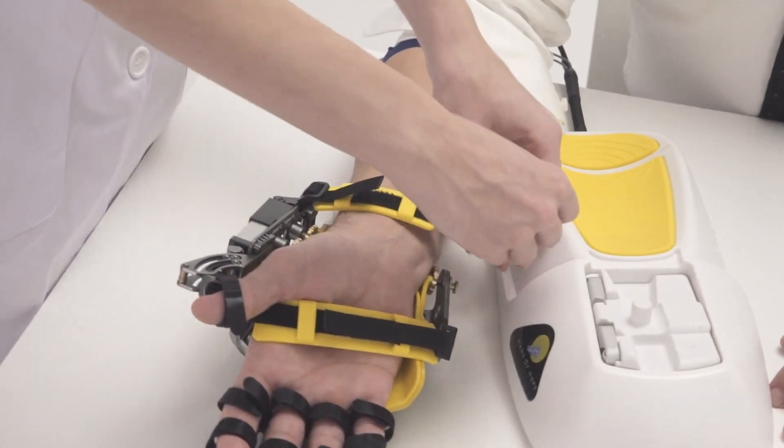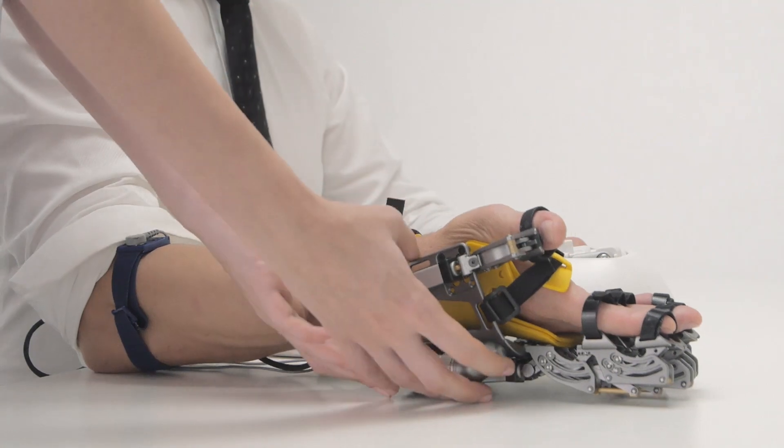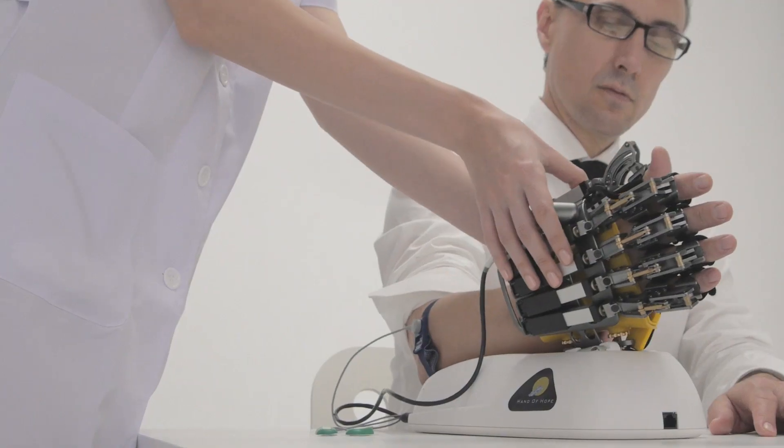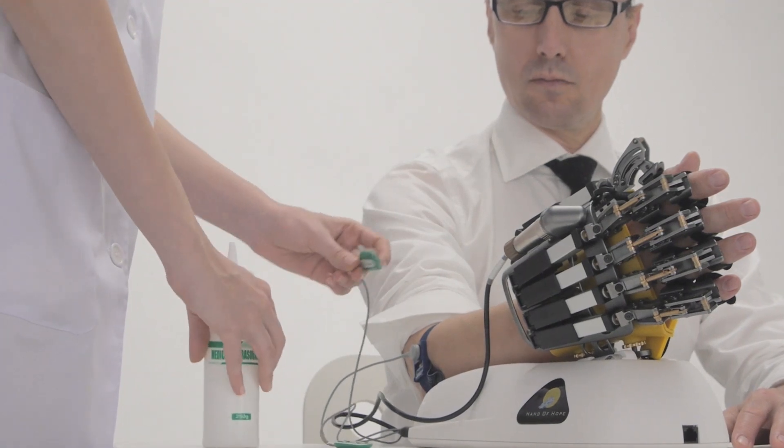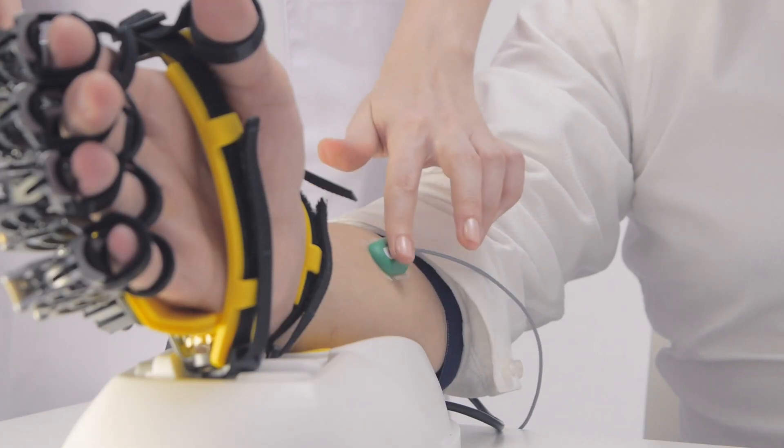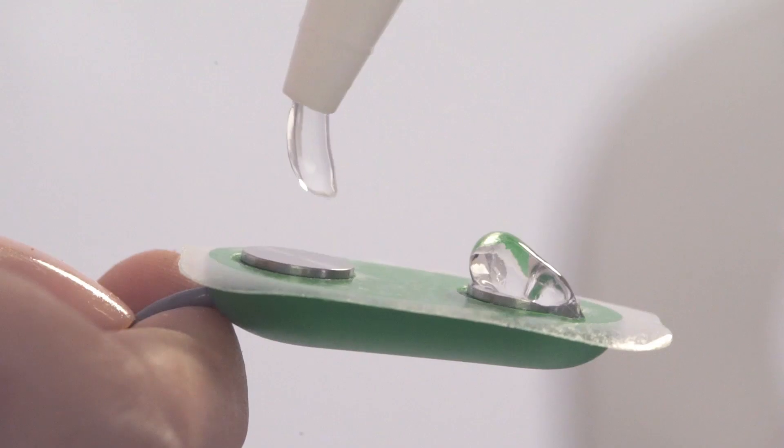Hand of Hope is relatively easy and quick to set up by following simple instructions. Rehab Robotics and Hong Kong Polytechnic University work together to develop it. The effectiveness of this patented technology is proven by clinical trials and published research papers.